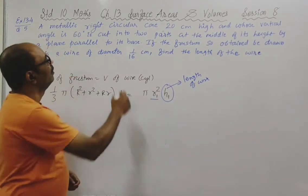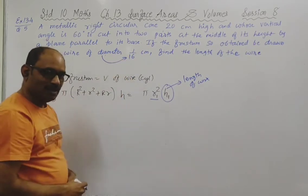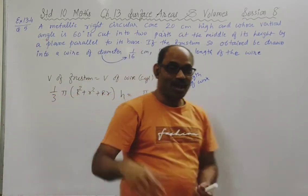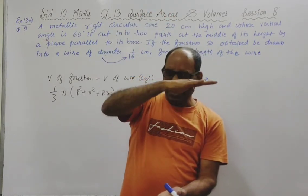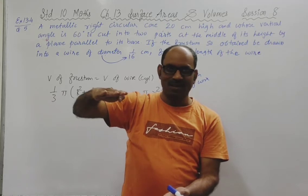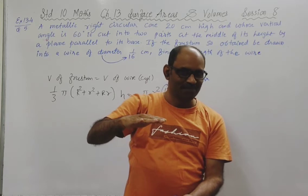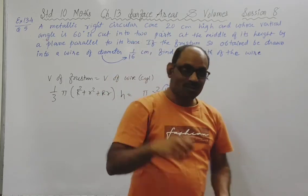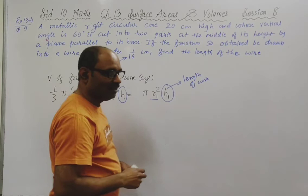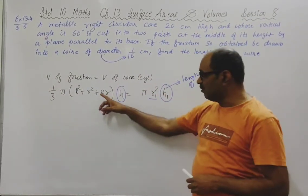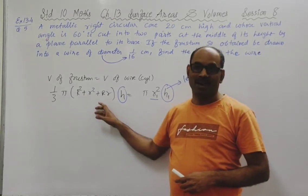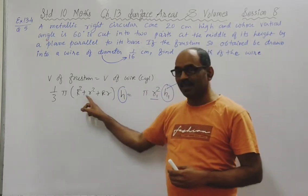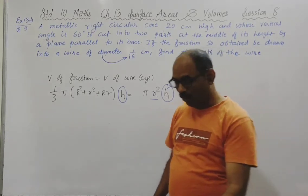What we need: radius of the wire - diameter is given so we can find radius. We also need the height of the frustum of cone - not given directly but since the original cone height is 20 cm and we cut from the middle, the frustum height is 10 cm. We still need to find capital R and small r - the two radii of the frustum.